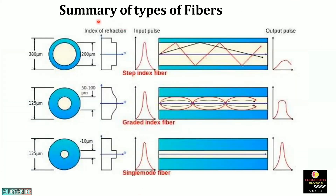Summary of types of fibres: step index has single mode and multi-mode variants, with broadening of output pulse. Graded index fibre transmits light in a parabolic manner, giving it higher signal-carrying capacity and bandwidth compared to step index. Single mode fibre, where light propagates through the axis of the fibre, has very low dispersion and attenuation compared to multi-mode, resulting in minimal signal degradation at the output.